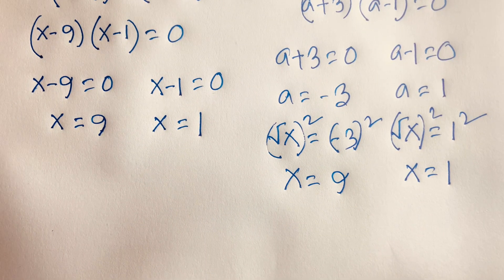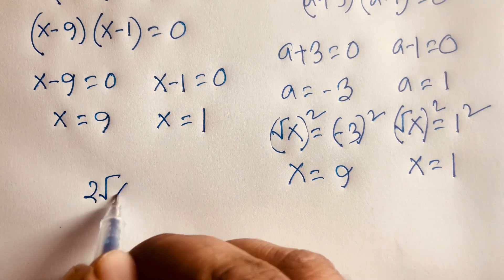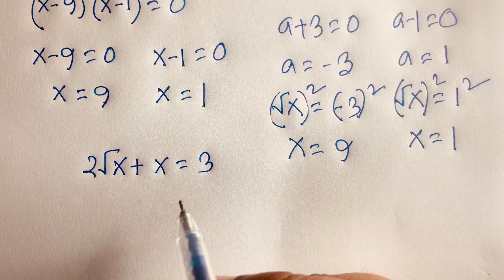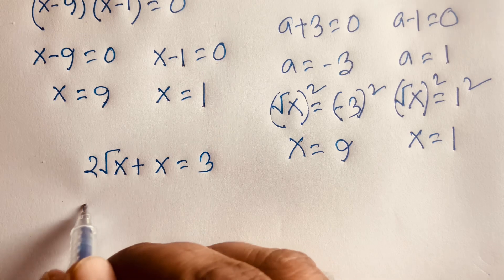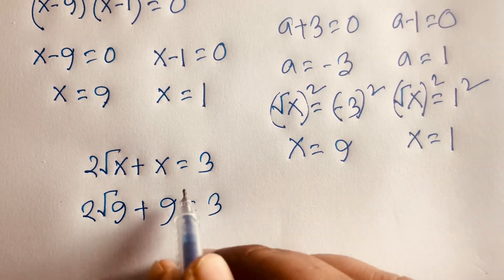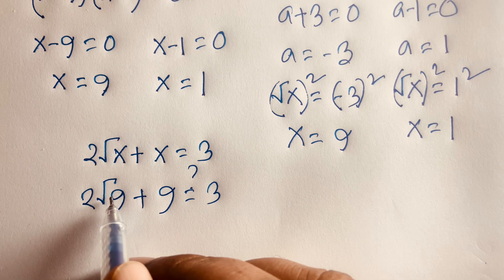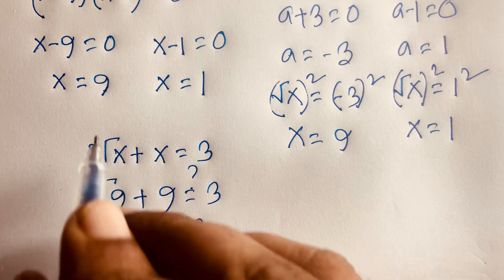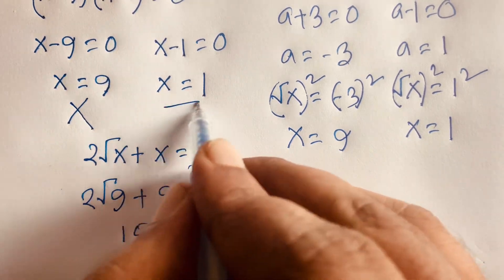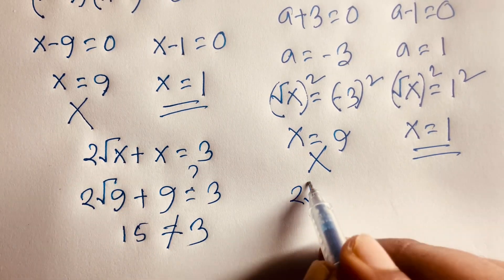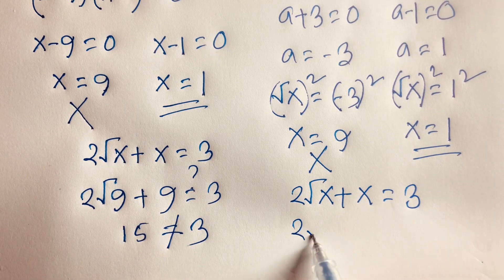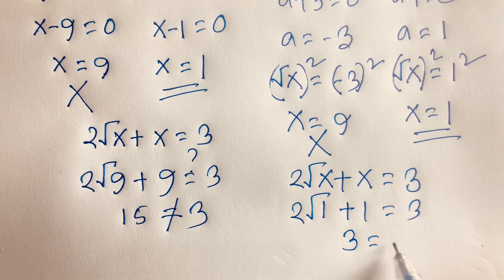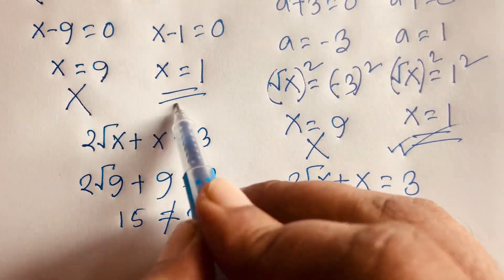Now let's verify. Our question is 2√x + x = 3. When x = 9: 2√9 + 9 = 2×3 + 9 = 6 + 9 = 15, and 15 ≠ 3, so x = 9 is not correct. When x = 1: 2√1 + 1 = 2×1 + 1 = 2 + 1 = 3, and 3 = 3. So x = 1 is our correct answer.